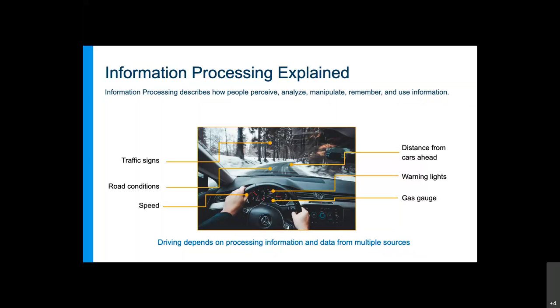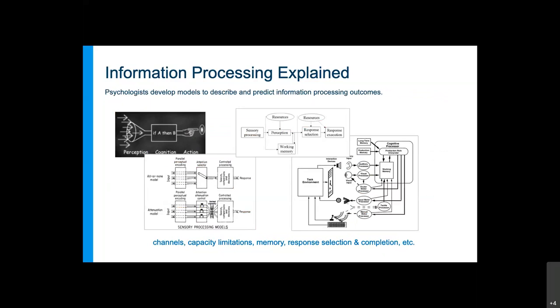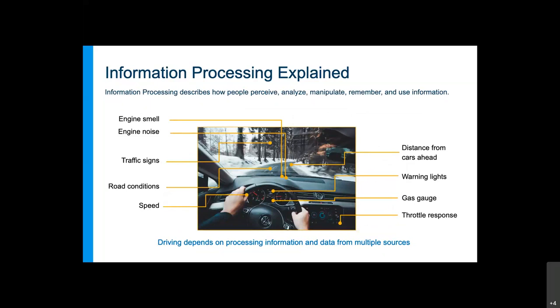We're going to demonstrate it using a really simple example of driving a car. When we're driving, visually we're inputting a lot of information—looking ahead on the road to signs, driving conditions, cars ahead of us. But there's also a lot of information we're processing inside the car on that dashboard: the gas gauge, the speedometer, any warning lights.